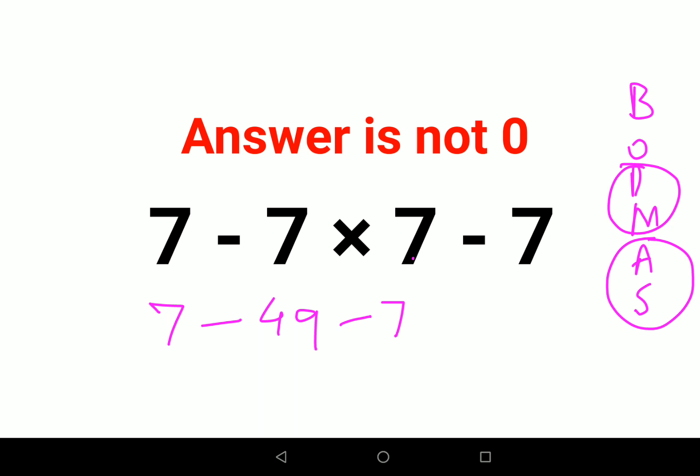Now, this can be done as what? 7 minus 49 that gets you minus 35. Minus 7 will get you what? See now both the values are having a negative sign.